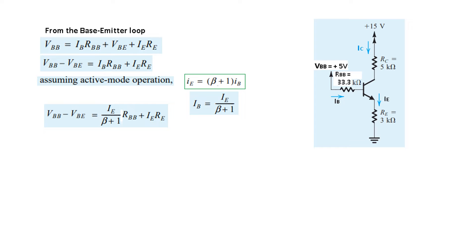In this equation, replacing Ib, we get all terms on the right-hand side in terms of Ie. Let's plug in the values: 5 - 0.7 = Ie/(β+1)*Rbb + Ie*Re. Rbb is 33.3, beta is 100, and Re is 3 kΩ. Simplifying this equation, we can calculate Ie = 1.29 milliamperes.